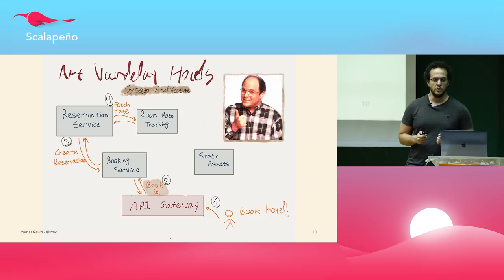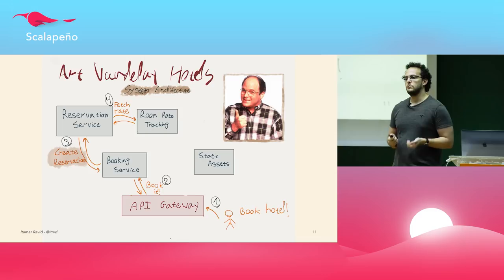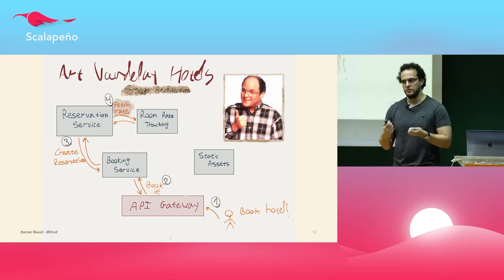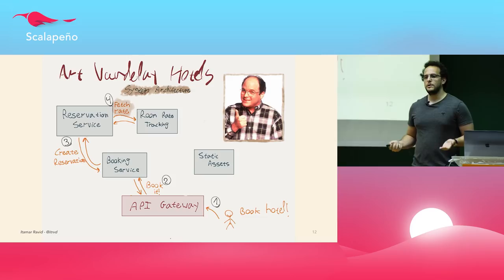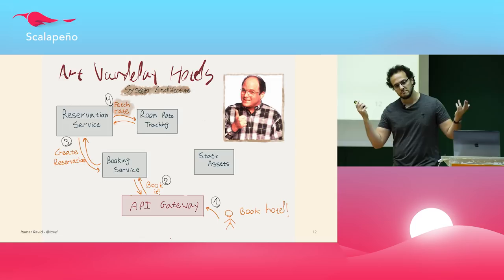Once the user is done fetching data, he sends a request to the booking service, which coordinates the booking transaction. The booking service reaches out to the reservation service to create a reservation, and the reservation service verifies that room rates are still up-to-date by reaching out again to the room rate tracking service. This is pretty straightforward — request-response semantics, rapid-fire development. You just ship another HTTP request whenever you need more information.